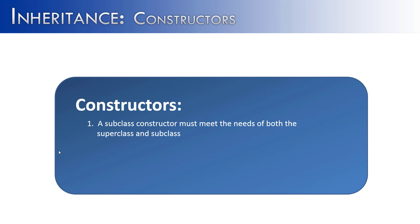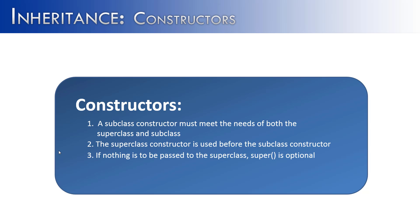In summing up constructors with inheritance: one of the most important things to remember is that a subclass constructor must meet the needs of both the superclass and the subclass. The superclass constructor's needs are met before the needs of the subclass constructor. If nothing is being passed to the superclass, the call to the superclass constructor is optional. But if something must be passed from the subclass to the superclass, the call to the superclass constructor is necessary and it must be the first call in the subclass. Inheritance is a cornerstone of Java, and understanding how constructors work within the inheritance framework is essential — the challenge stems from only creating one object but yet having to meet the needs of both the super and subclass.